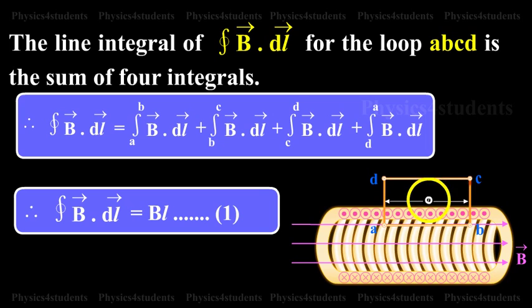If L is the length of the loop, the first integral on the right side is BL. The second and fourth integrals are equal to zero because vector B is at right angles for every element vector dl along the path. The third integral is zero since the magnetic field at points outside the solenoid is zero.